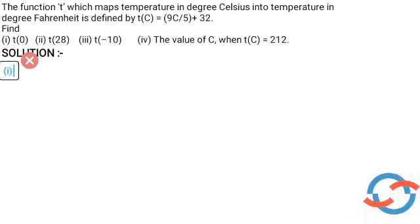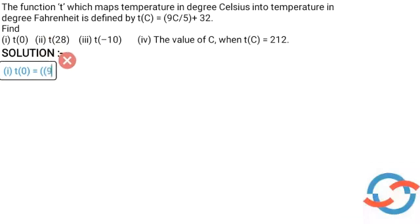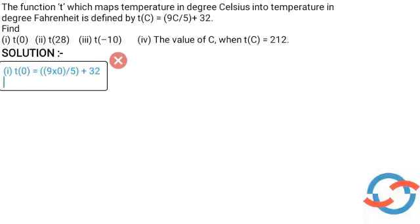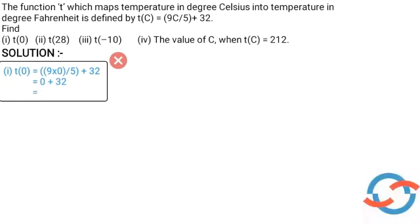First question is T of 0. If we see the value of C equal to 0, then T of 0 equals 9 into 0 by 5 plus 32. Since 9 into 0 is 0, and 0 by 5 is 0, we get 0 plus 32 equal to 32. So T of 0 is 32. Our first answer is 32.